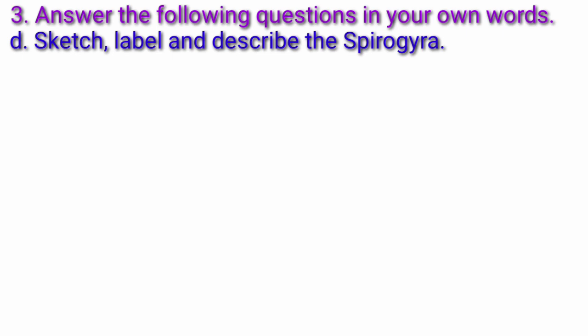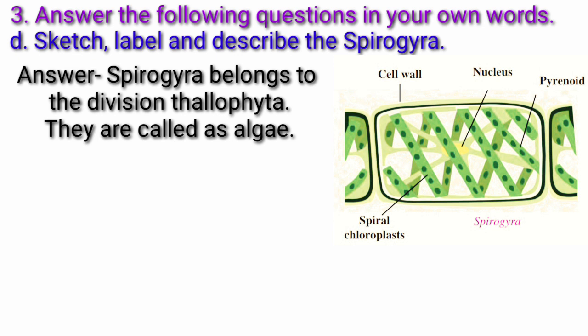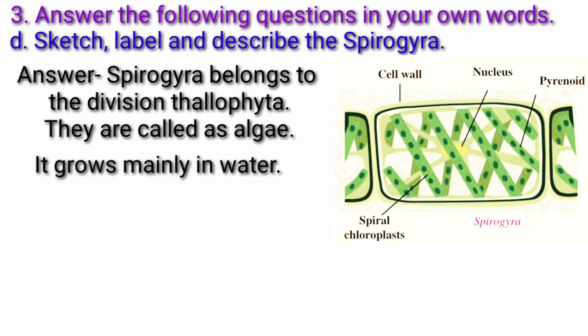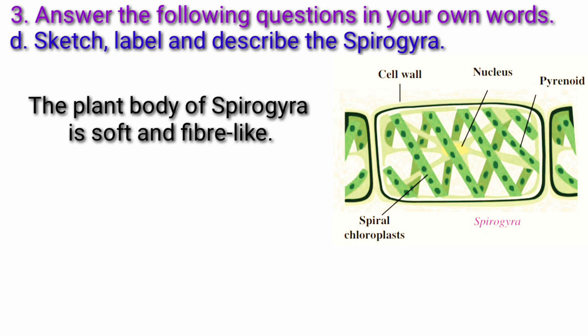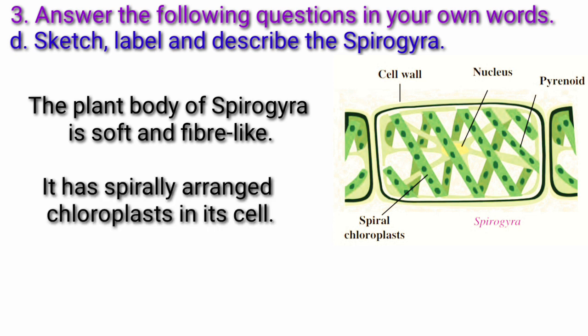Question D: Sketch, label and describe Spirogyra. Answer: Spirogyra belongs to the division Thallophyta. They are called algae. It grows mainly in water. It does not have specific parts like root, stem, leaves or flowers, but is autotrophic due to the presence of chlorophyll. The plant body of Spirogyra is soft and fiber-like. It has spirally arranged chloroplasts in its cells.